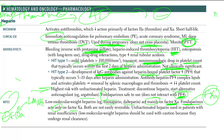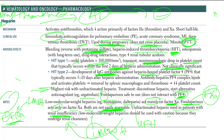Fondaparinux is only fond of factor 10. Low molecular weight heparin mainly inhibits factor 10 but can also inhibit other things. Both are not easily reversible. Unfractionated heparin is used in patients with renal insufficiency, while low molecular weight heparins should be used with caution because they undergo renal clearance — do not give in renal insufficiency.